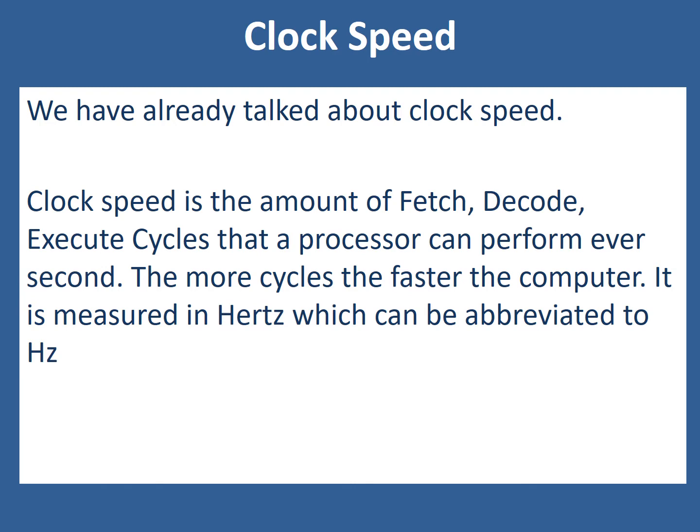We've already talked about clock speed. This is the number of fetch, decode and execute cycles that a processor can perform every second. The more cycles the computer can carry out, the faster the computer will be, and it's measured in hertz, abbreviated to Hz. Please go and update your page in your workbook to explain why clock speed affects the speed of the processor.